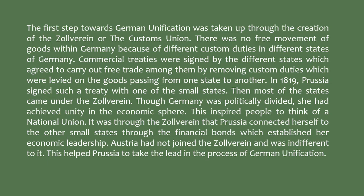Though Germany was politically divided, she had achieved unity in the economic sphere, which inspired people to think of a national union. It was through the Zollverein that Prussia connected herself to other small states through financial bonds, establishing her economic leadership. Austria had not joined the Zollverein and was indifferent to it, which helped Prussia take the lead in the process of German unification.